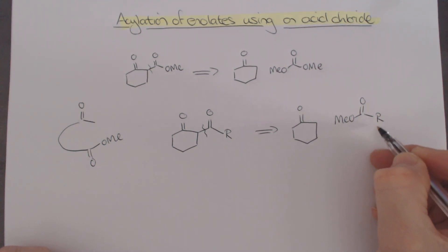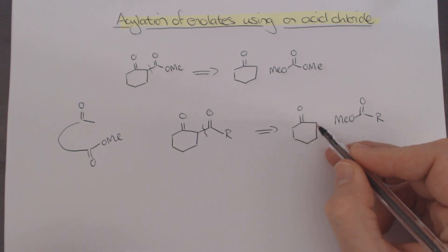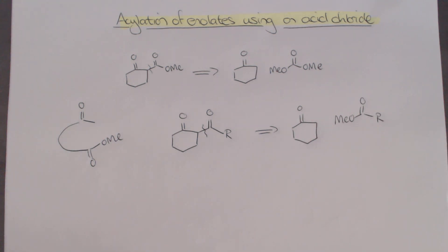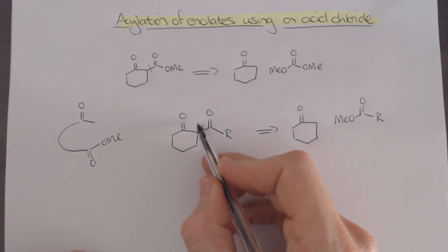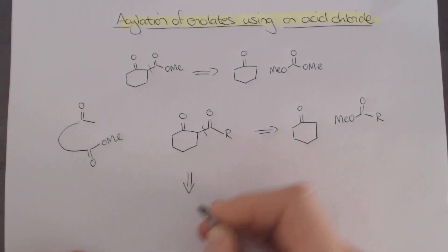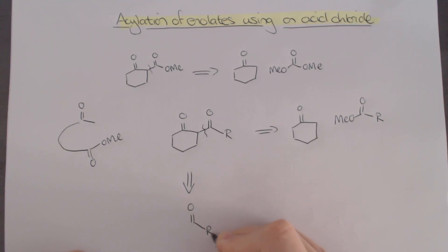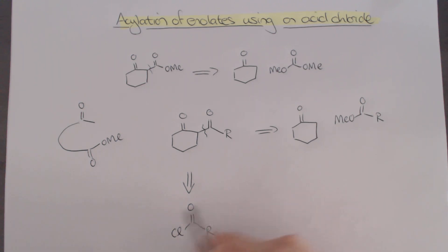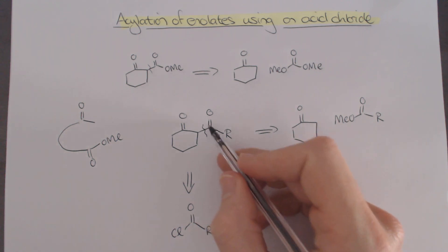Particularly if there's an enolizable position there, yes we could use LDA to form the enolate and get it to work, but this is not a very reactive partner — it works but it's not that reactive. What would be nice is to have a more reactive partner for this disconnection, and that of course is the acid chloride. We know acid chlorides are incredibly reactive.